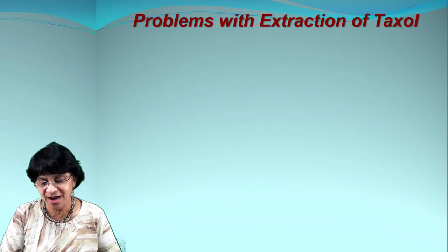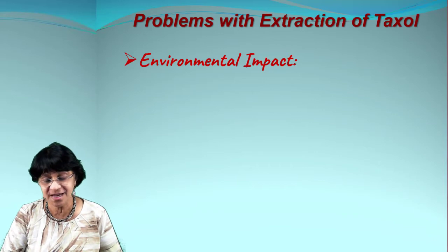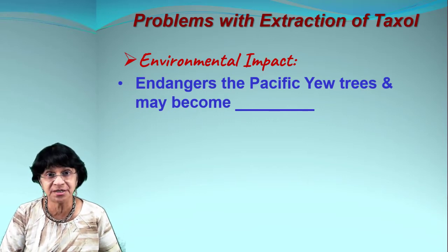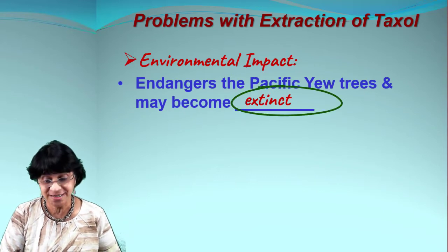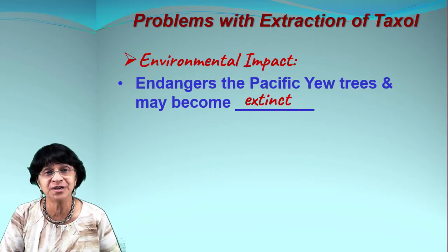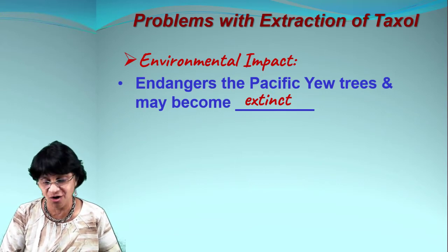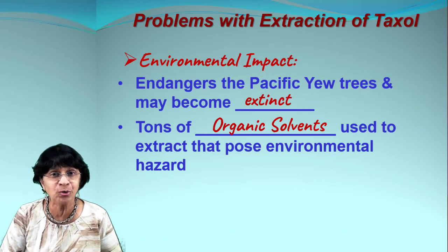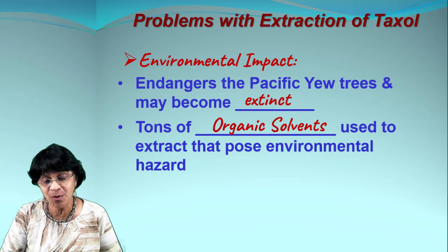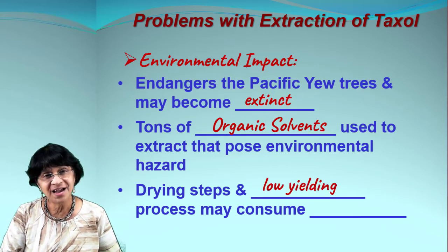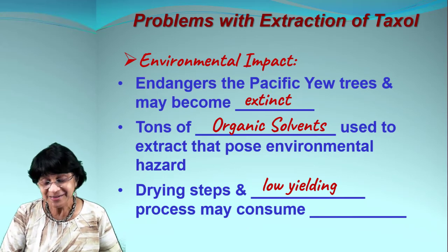The problem is the yield is extremely low — about 0.004% — which is not economical at all. There are also serious environmental impacts: using the Pacific yew tree endangers the species and it may become extinct, and it takes about 200 years to grow to the level where bark can be harvested. Extraction also requires tons of chlorinated organic solvents like chloroform and dichloromethane, which pose environmental hazards.